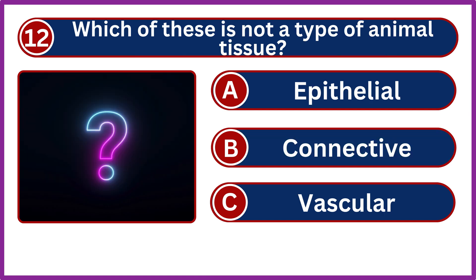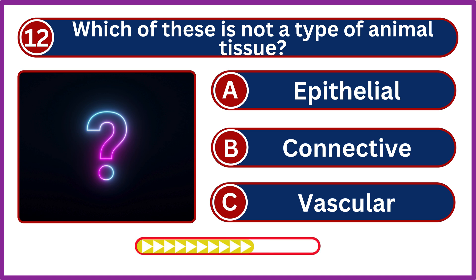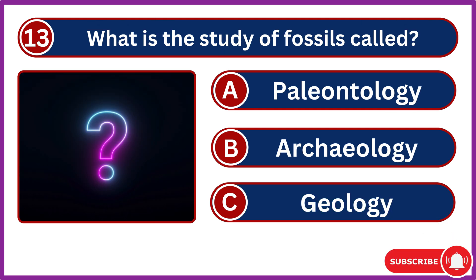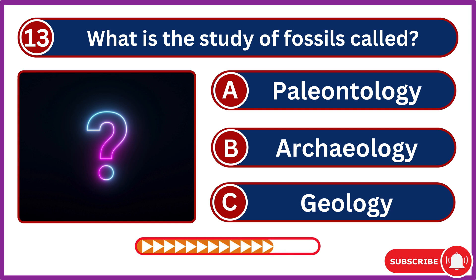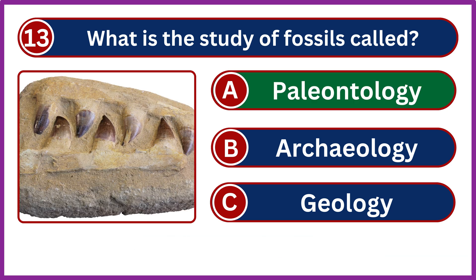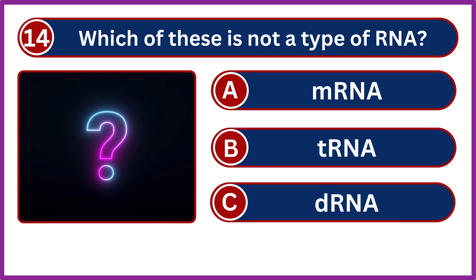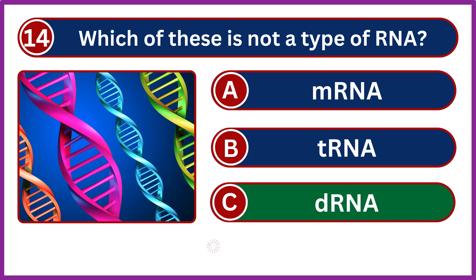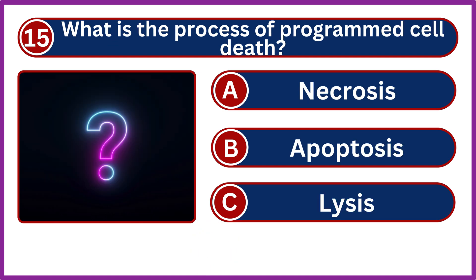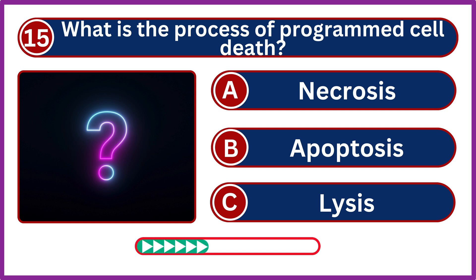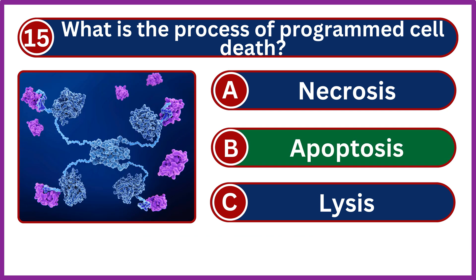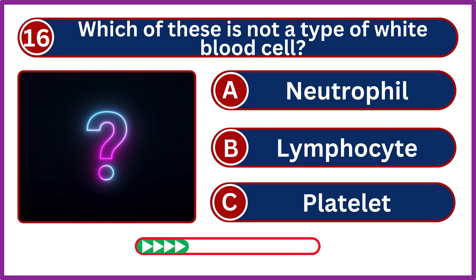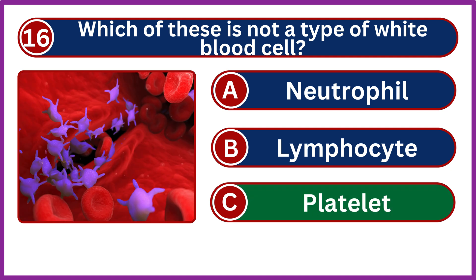Which of these is not a type of animal tissue? Vascular. What is the study of fossils called? Palaeontology. Which of these is not a type of RNA? DRNA. What is the process of programmed cell death? Apoptosis. Which of these is not a type of white blood cell? Platelet.